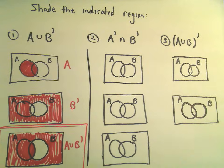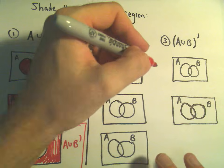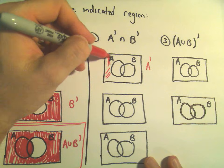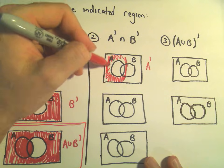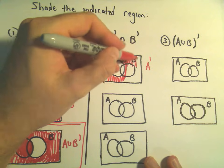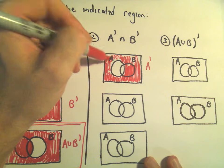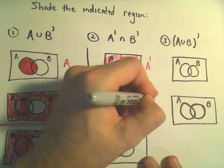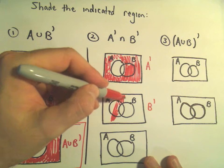Suppose we want to shade NOT A AND NOT B. Well, if I want to do NOT A, that would be everything outside of circle A. So everything outside of circle A would give me the first little diagram. If I do everything that's NOT in B, well, that would be everything outside of circle B.